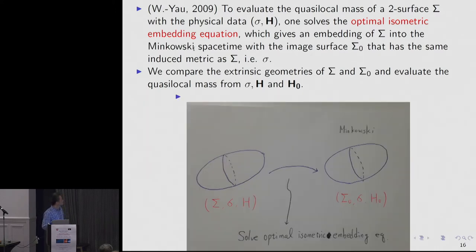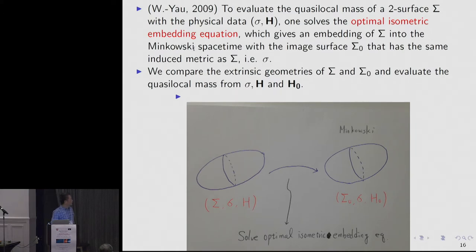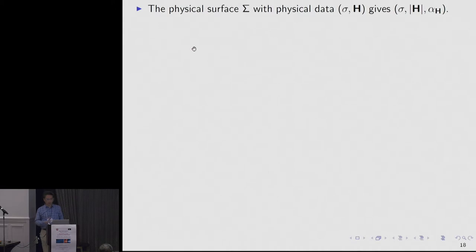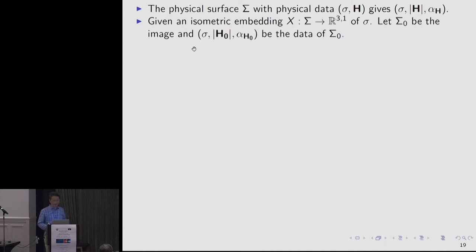Here's the picture. This is the surface we're interested in, sitting in a spacetime. We gather the data — the induced metric, the intrinsic geometry, and also the mean curvature vector field H. Then we solve the optimal isometric embedding equation and find another surface in Minkowski space. These two surfaces have the same intrinsic geometry, but they do have different extrinsic geometry.